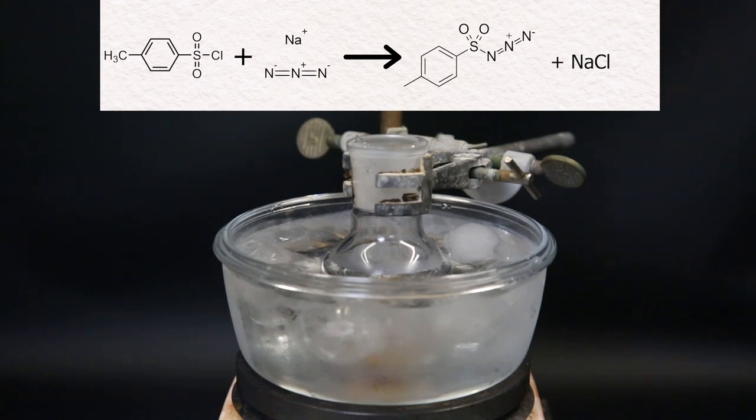In this reaction, the chlorine from the tosyl chloride is simply replaced by the azide group from sodium azide to form tosyl azide and sodium chloride.